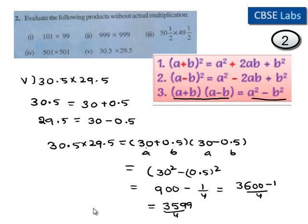Therefore, the product of 30.5 times 29.5 is equal to 3599 upon 4.